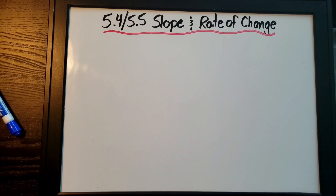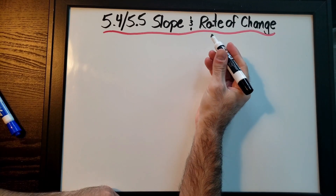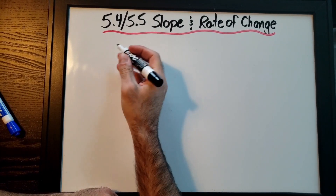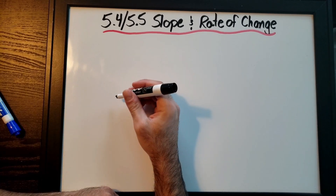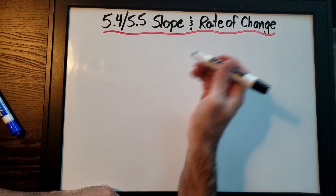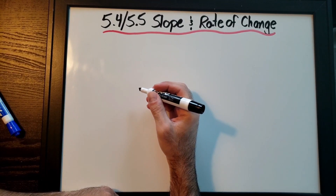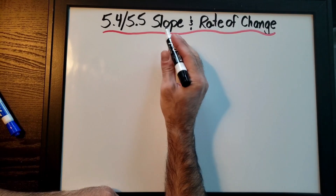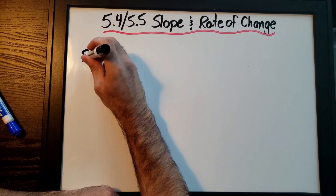Now let's talk about slope as a rate of change. The only difference between slope and rate of change is the units. Slope can describe a hill where the units are the same, but rate of change involves two different units. A really common example of rate of change that you experience every day is speed.